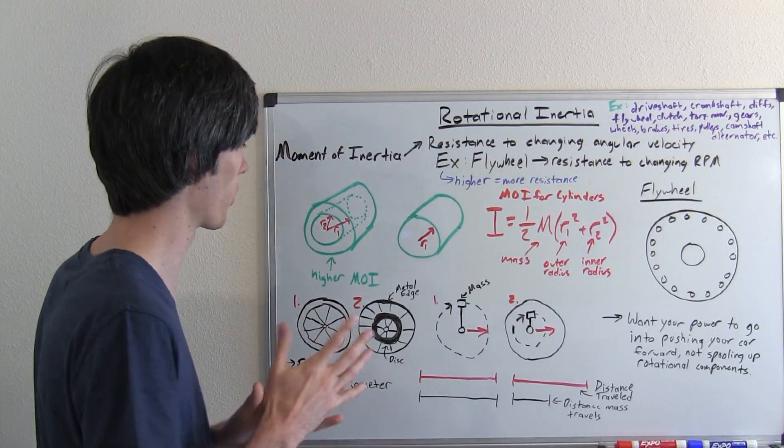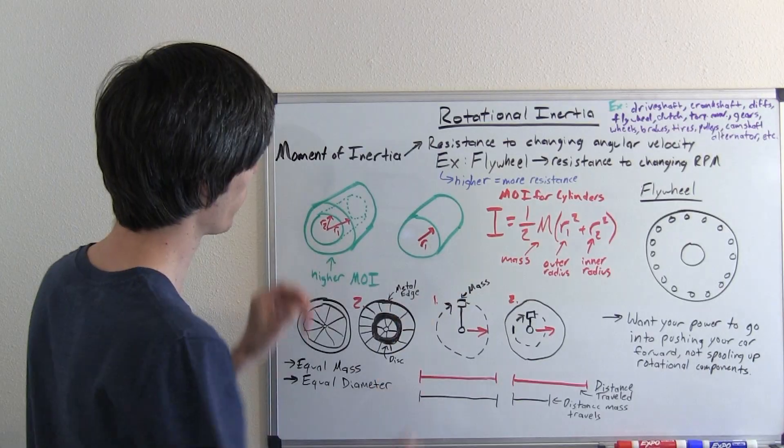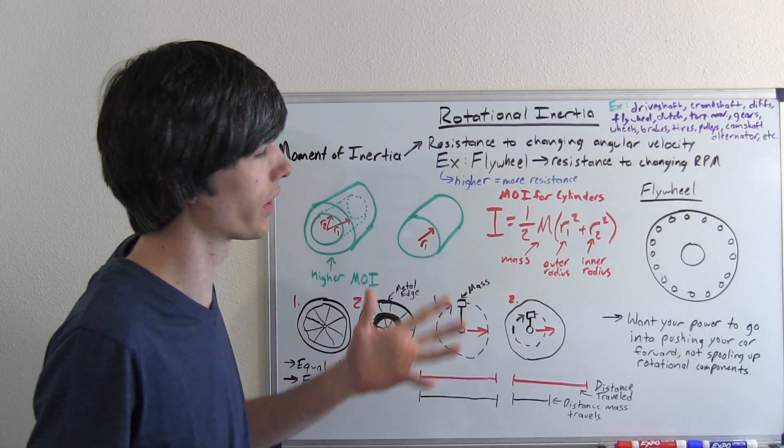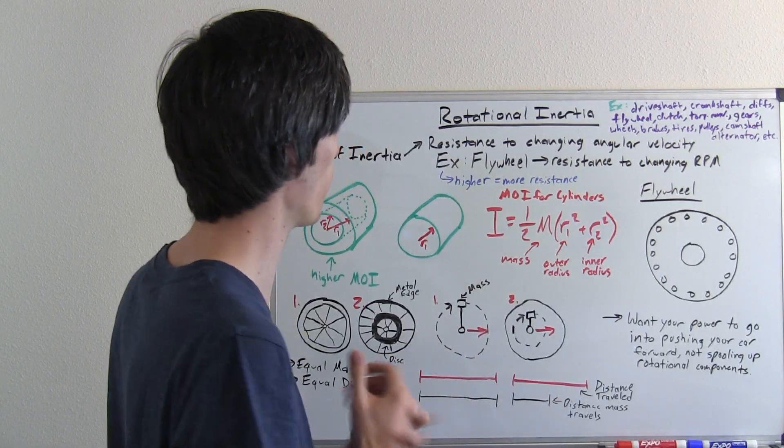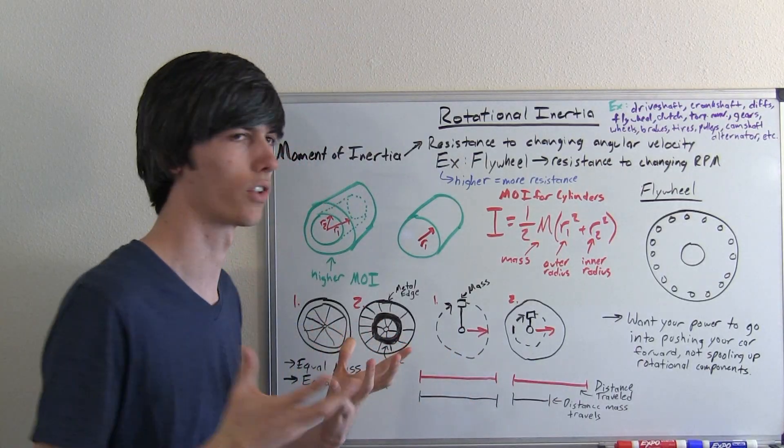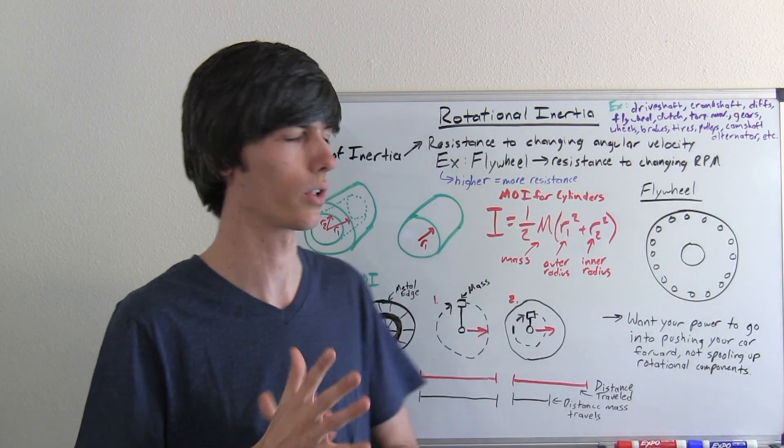Once again, higher means more resistance. If you take two cylinders here, basically in automotive applications everything can really be represented by cylinders. All the applications within a car where you would have rotational inertia.